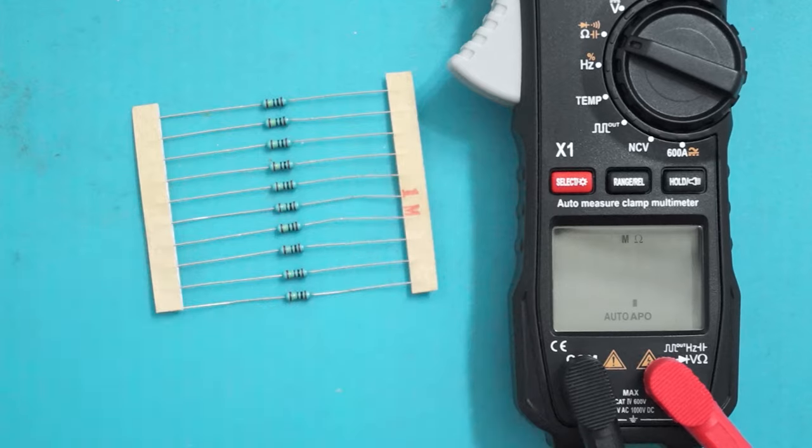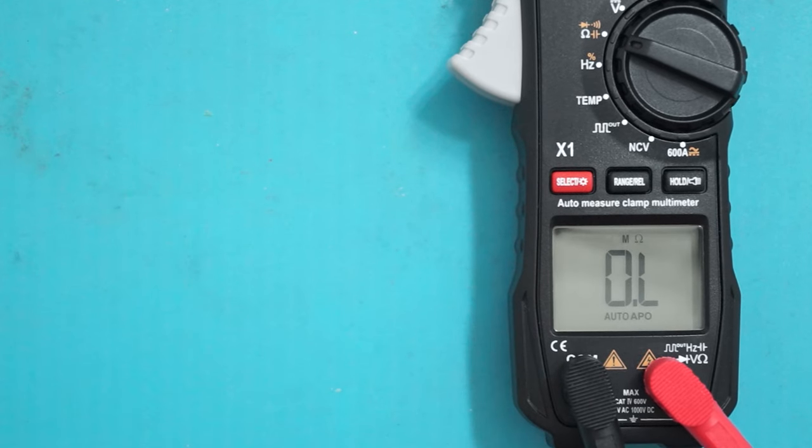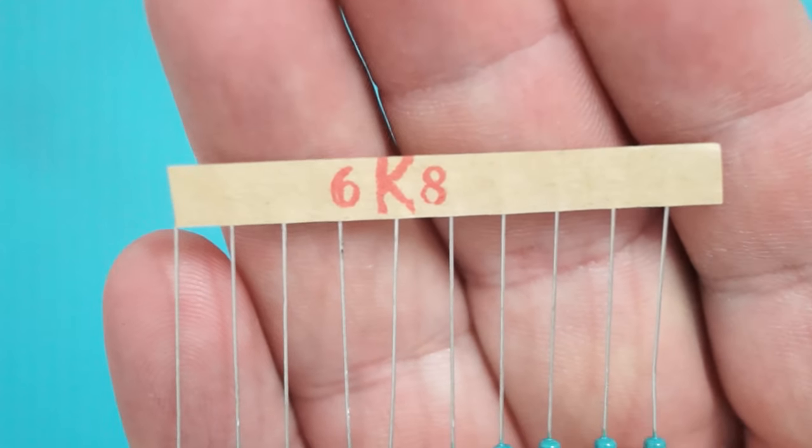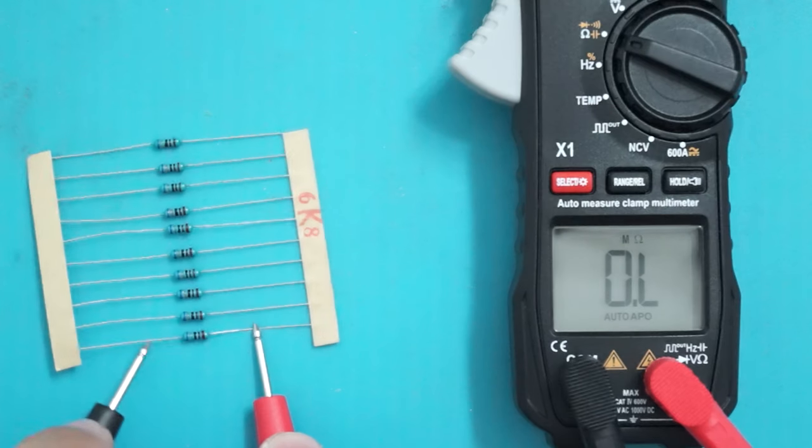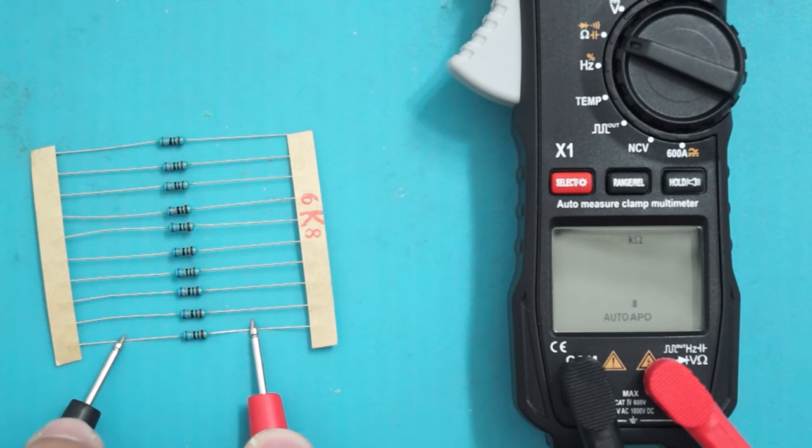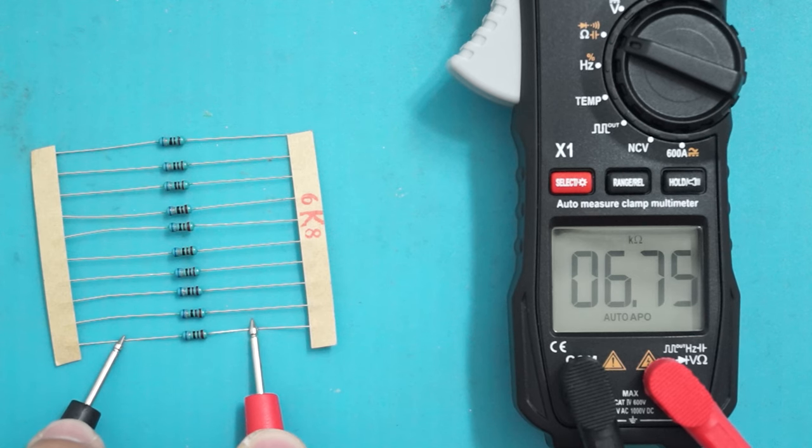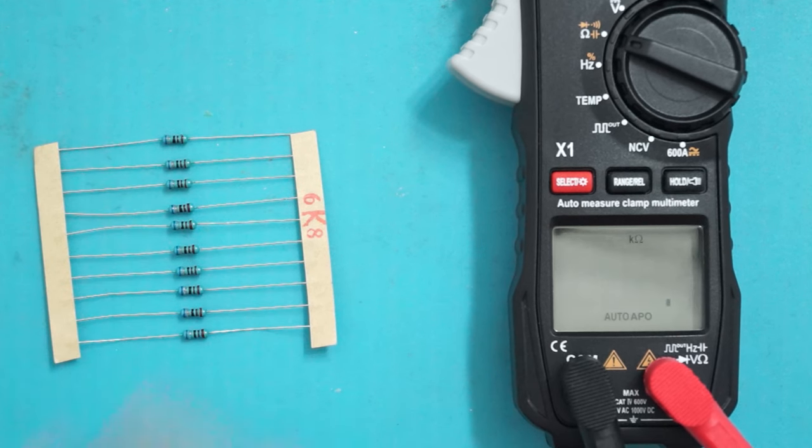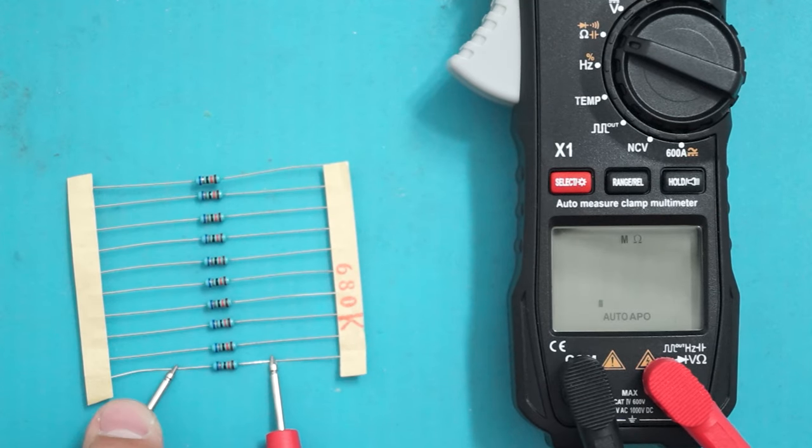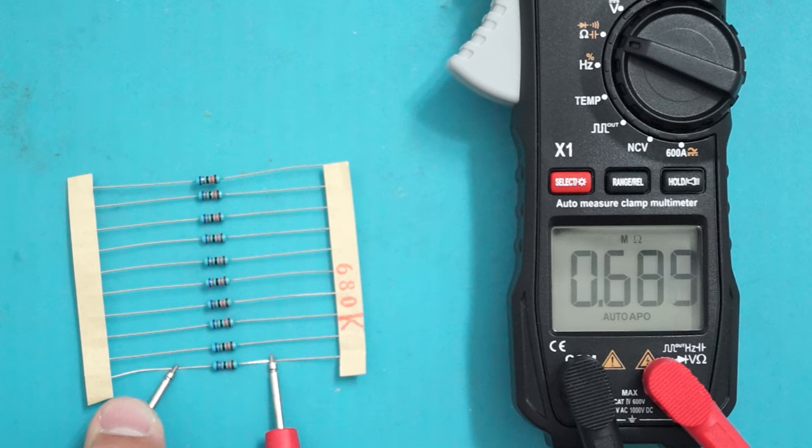This one, about the same value. Let's also test with this one, which is 6,608 ohms. As you can see, it's saying 6.75, so it's accurate enough. Let's try another one: 680,000 ohms. Again, 0.69 megaohm.